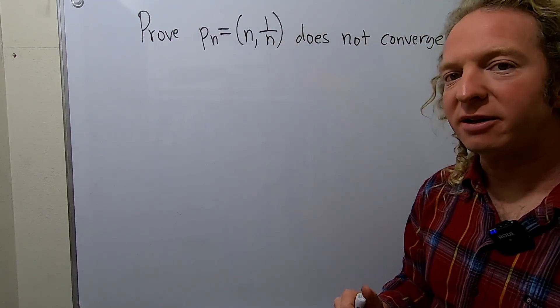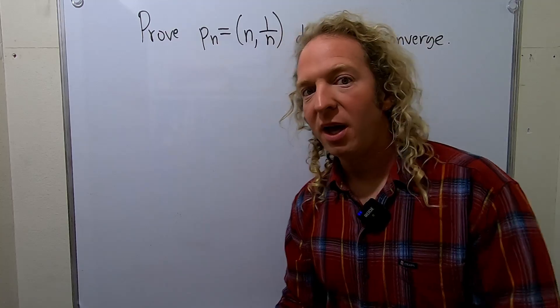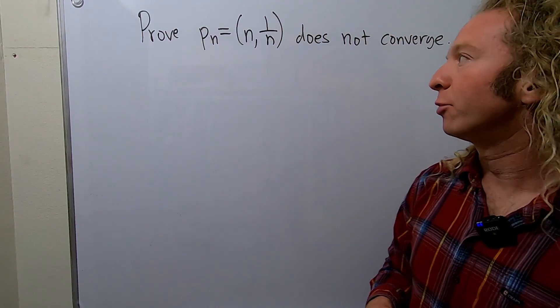So we're going to use the fact that if a sequence converges, it is bounded. And we're going to use that to do a proof by contradiction.